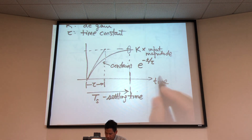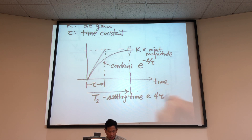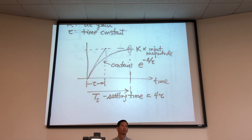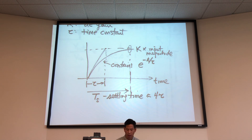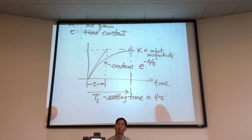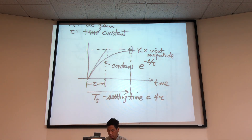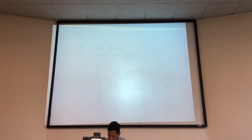A rough rule of thumb is that T_S is approximately 4 times τ. Let's talk a little bit about why settling time equals 4τ.